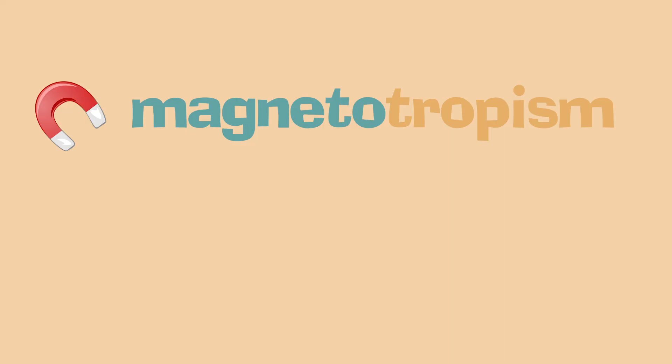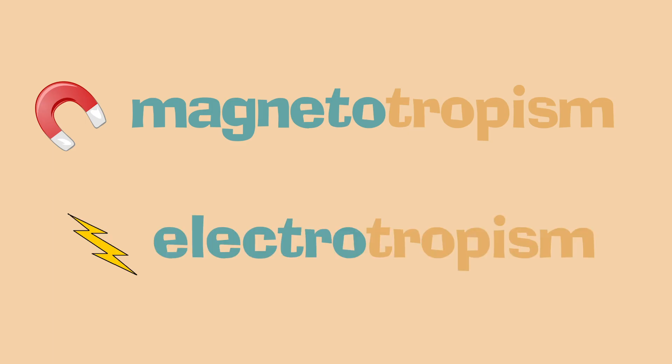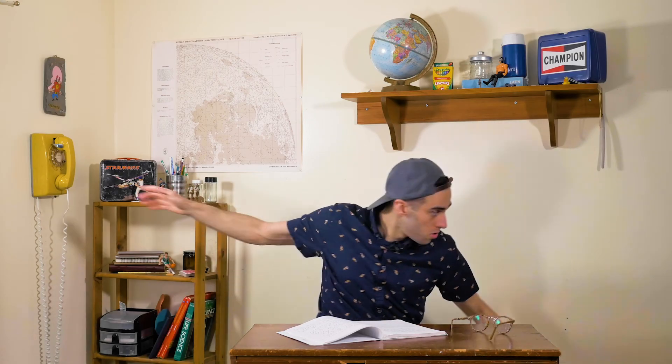All right, friends. Next time you're out in nature, pay attention to plants and how they are reacting to their environment. And if you're still curious, do some more research on some of the wacky tropisms out there, like magnetotropism or electrotropism. How cool is that? All right, see you next time. And remember, be curious and ask questions.